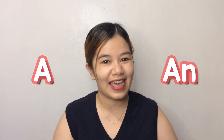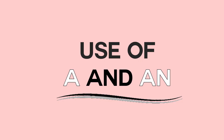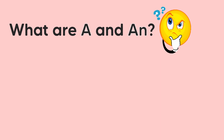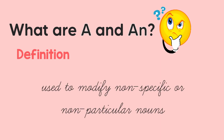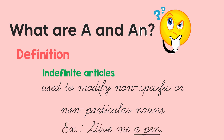Now, let's talk about the proper use of articles A and AN. What are A and AN? These words are used to modify nonspecific or nonparticular nouns. Since they are used to modify nonspecific or nonparticular nouns, they are called indefinite articles. For example, 'give me a pen.' When you say 'give me a pen,' you are asking for someone to give you any type of pen — not a specific or particular pen. You are requesting any kind of pen. Hence, we use an indefinite article, which is A.